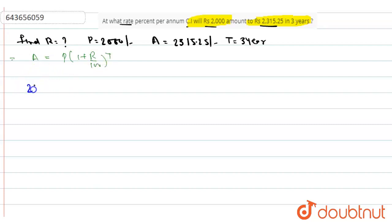So, amount equals 2315.25 equals principal equals 2000 times (1 plus R upon 100) to the power 3. Now, 2315.25 divided by 2000 equals (1 plus R upon 100) to the power 3.